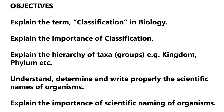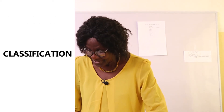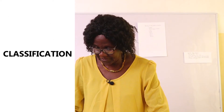These are the objectives. There's a term called taxonomy. Taxonomy is simply the science of classification. Classification is the grouping of things or organisms where similar organisms or similar things are put into the same group. Simply, that is classification.